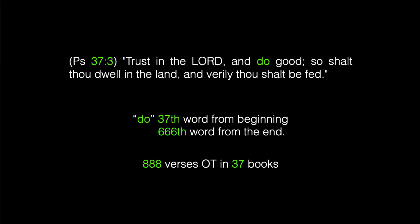In Psalm 37, every word that is a multiple of 37 counting from the beginning of the psalm will be a multiple of 37 counting back from the end of the psalm. For example, the word 'do' is the 37th word from the beginning and the 666th word from the end. The word 'do' occurs in 888 verses of the Old Testament in 37 books.